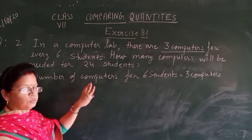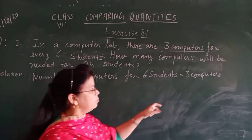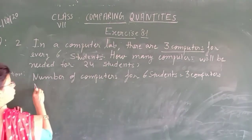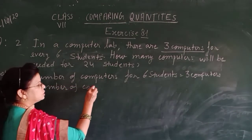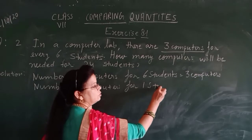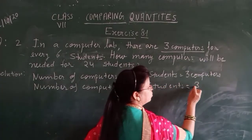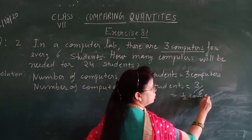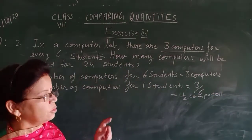First of all, number of computers for 6 students — 6 students available in the lab, there are 3 computers. So, number of computers for 1 student: 3 divided by 6, that is 1 by 2. So, what is the ratio of computers for 1 student? That is 1 by 2.